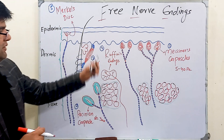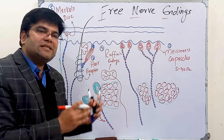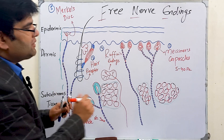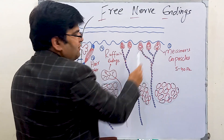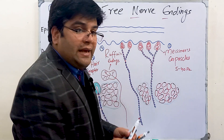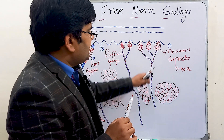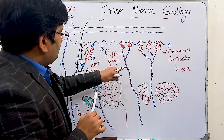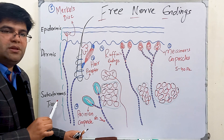To summarize, we have discussed cutaneous mechanoreceptors — their location, rate of adaptation, and the sensations they carry. We discussed six important tactile receptors. Meissner's corpuscles are present in the upper part of the dermis; they are encapsulated receptors that detect low-frequency vibrations, tap and flutter — like tickling the skin with a feather. They are rapidly adapting receptors present in non-hairy skin. Pacinian corpuscles are encapsulated receptors present deep in subcutaneous tissue and also in muscles, in both types of skin.